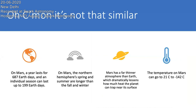We are not that similar to Mars. One year on Earth is 365 days, whereas on Mars one year is 687 Earth days, and one season can last up to 200 Earth days. On Mars, the northern hemisphere's spring and summer are longer than fall and winter. Mars has a far thinner atmosphere than Earth, which dramatically lessens how much heat the planet can retain.